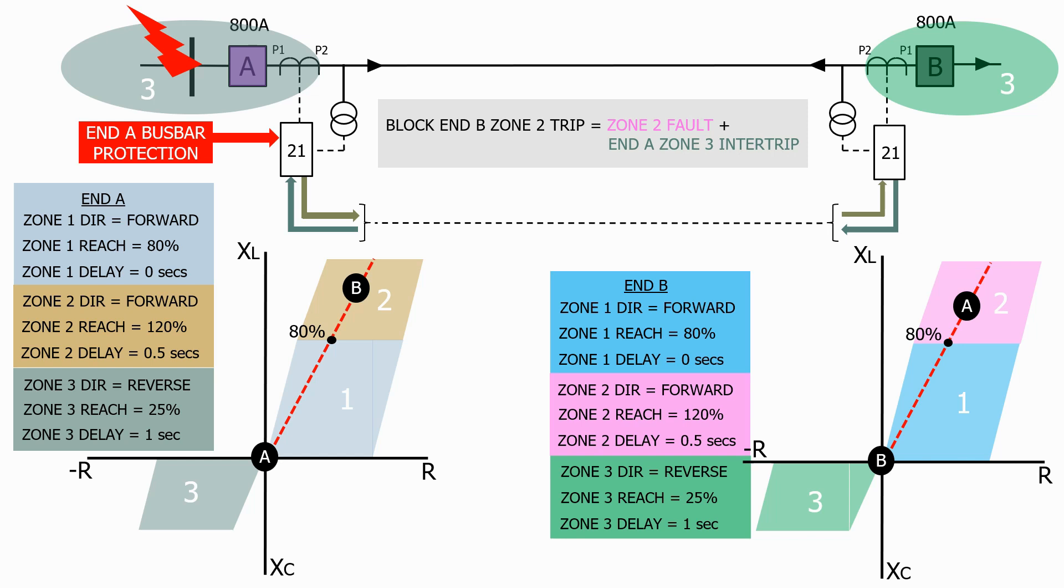This is called a blocking scheme for obvious reasons, and we're using the reverse zone to provide us with more information and to confirm that the fault is outside the protected zone. This is called a penetration mechanism.